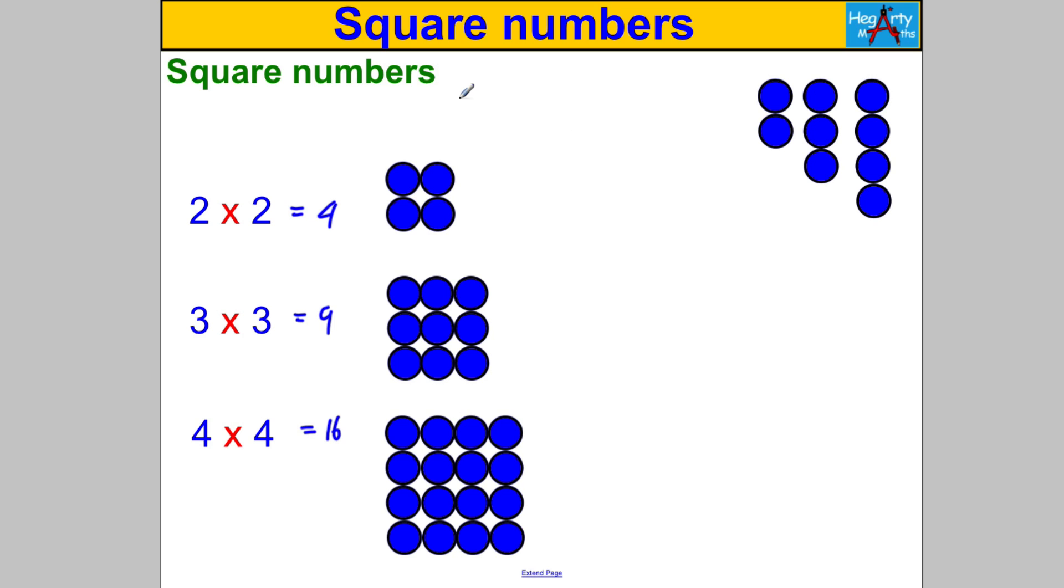Now here we have 4 circles together. Here we've got 9 and here we've got 16. Can you tell me why 4, 9 and 16 might be called square numbers? Well 4 objects, 4 little circles, you can arrange them into a square arrangement. 9 you can arrange into a 3 by 3 square and 16 into a 4 by 4 square.